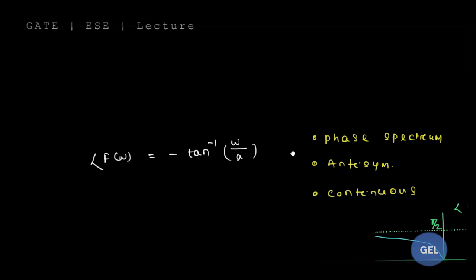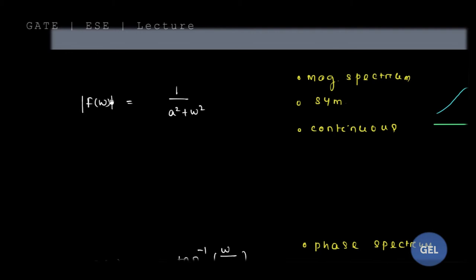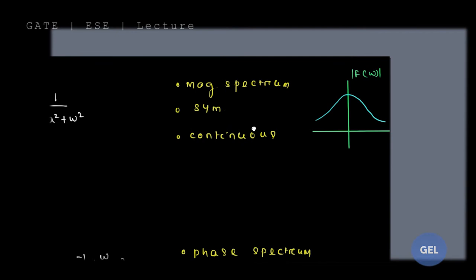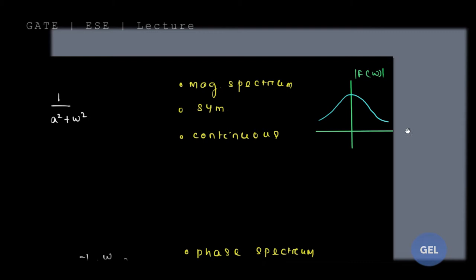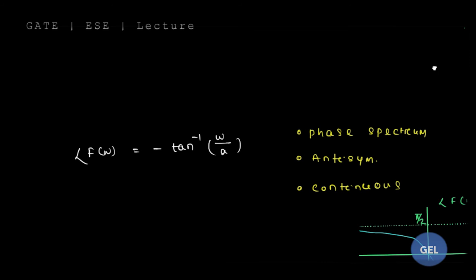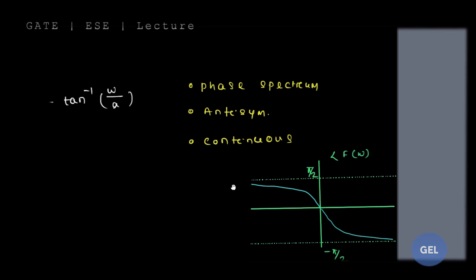If you have an even conjugate function and you take the modulus |F(ω)|, you get 1/√(a² + ω²). The magnitude spectrum in Fourier analysis is symmetric. As you are doing the Fourier transform, this entire thing comes out to be continuous. Similarly, the phase spectrum is anti-symmetric: φ(ω) = −tan⁻¹(ω/a), which is anti-symmetric as you can see from the graph.